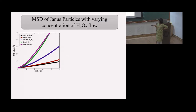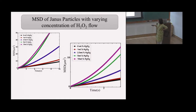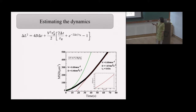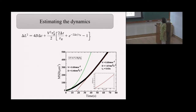As the amount of peroxide goes up, you can see that initially the motion looks ballistic, and after that it seems to become diffusive. We can magnify the first part of the plot to see this curvature. We estimate the dynamics of a single particle by a very well-known equation and fit the mean square displacement versus time.